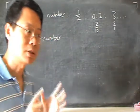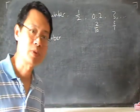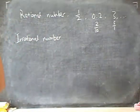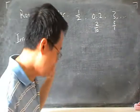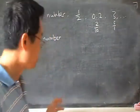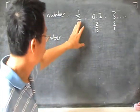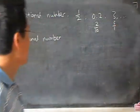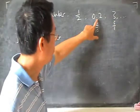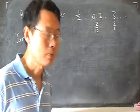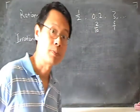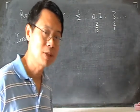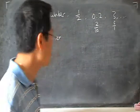Irrational numbers are slightly harder to understand — they're actually a bit more abstract. Because the numbers that we are most familiar with tend to be fractions, decimals, or whole numbers. And as you can see, if I have a decimal, I can always write it as a fraction. So, can we think of some numbers that cannot be written as a fraction?